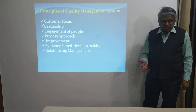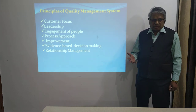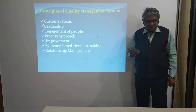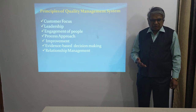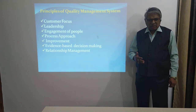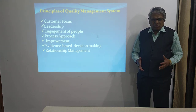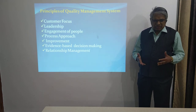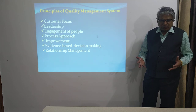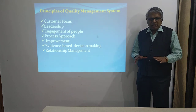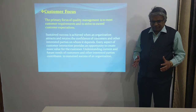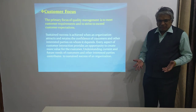Most importantly, we have many interested parties. The customer is an interested party, shareholders are an interested party, vendors are an interested party, and employees are an interested party. Unless you manage relations with these parties, it is very difficult for you to survive. Relationship management is the seventh principle. Like this, there are 7 management principles detailed in ISO 9001-2015 — let us discuss each in detail.